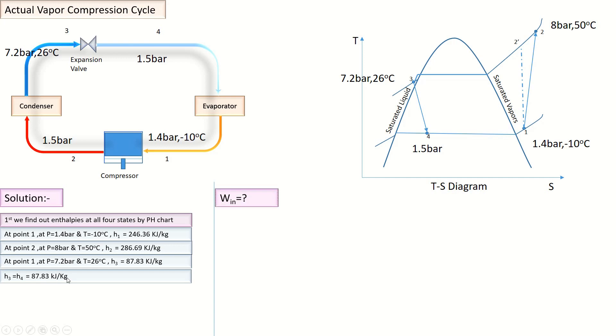Moving to the solution. First, we have to find the power required by the compressor or work input by the compressor. It can be calculated by multiplying the difference of enthalpies between Point 1 and Point 2 by the mass flow rate.